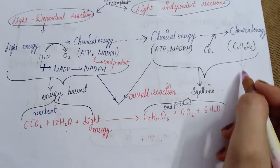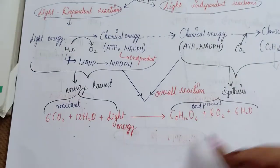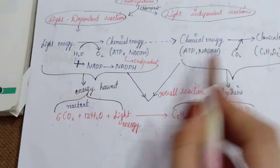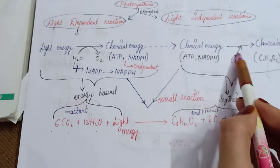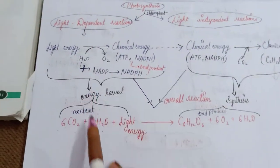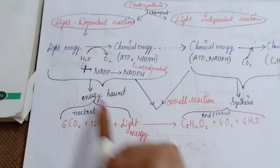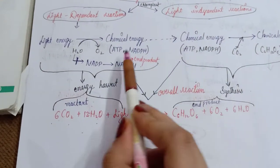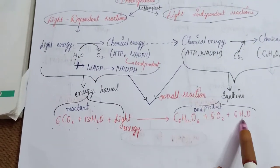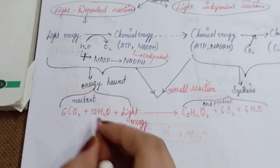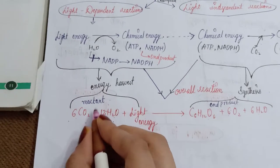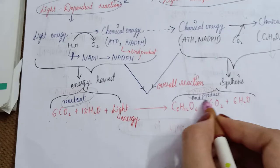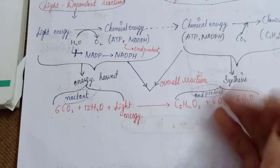This glucose can later be converted into starch. Overall, what we utilize are carbon dioxide, water, and light — and what we produce are glucose and oxygen. These are the reactants and these are the end products.